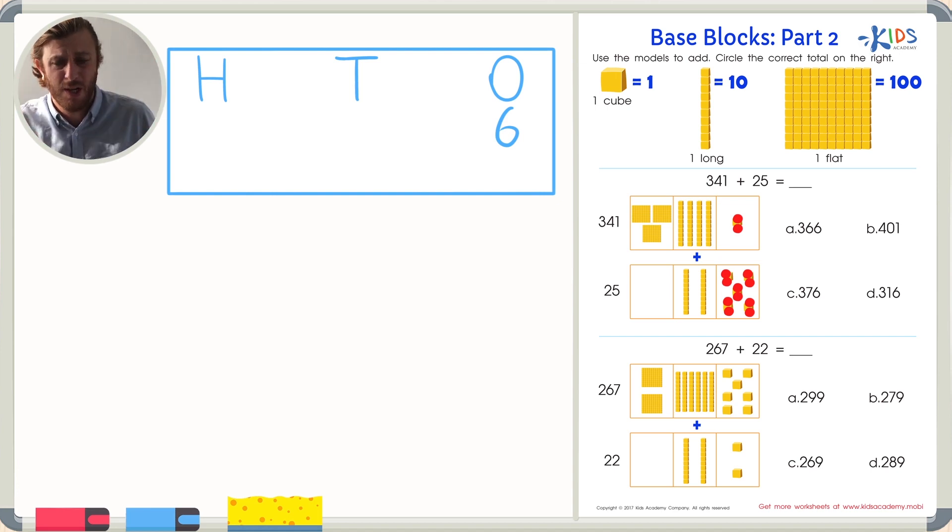Let's do the same thing for the tens. Let's just count them as one long each. In the number 341, there are one, two, three, four tens. In the number 25, there are one, two tens. Now, just like last time, let's count them all together as groups of tens. One, two, three, four, five, six. There are six tens. So let's write six in the tens place.